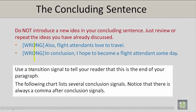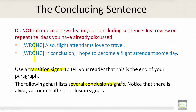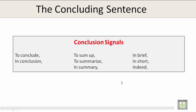Use a transition signal to tell your reader that this is the end of your paragraph. The following chart lists several conclusion signals. Notice that there is always a comma after conclusion signals. Conclusion signals: To conclude. In conclusion. To sum up. To summarize. In summary. In brief. In short.